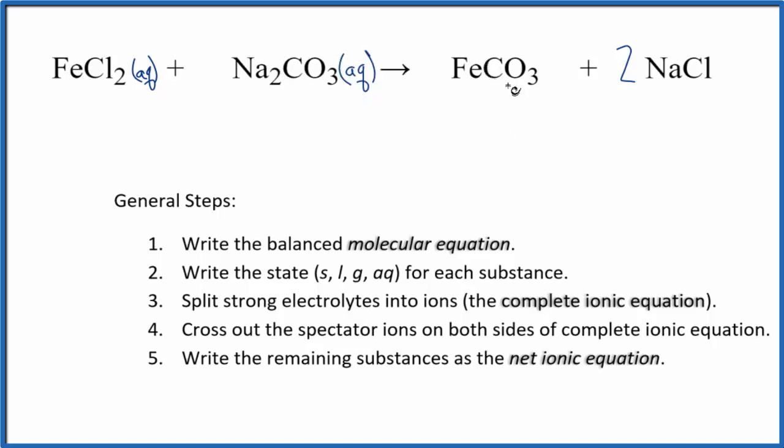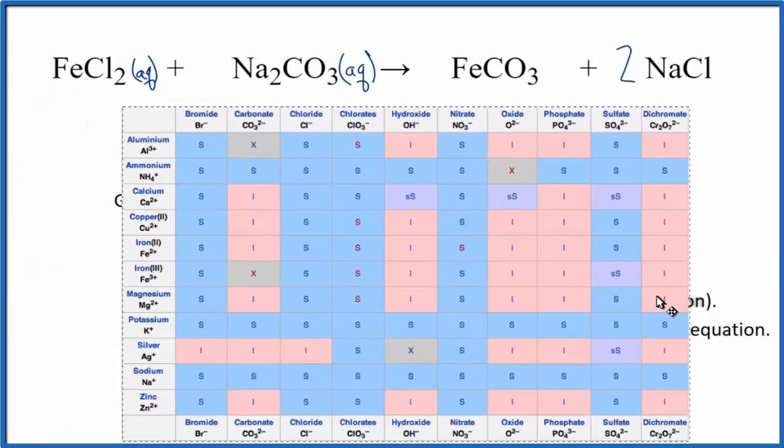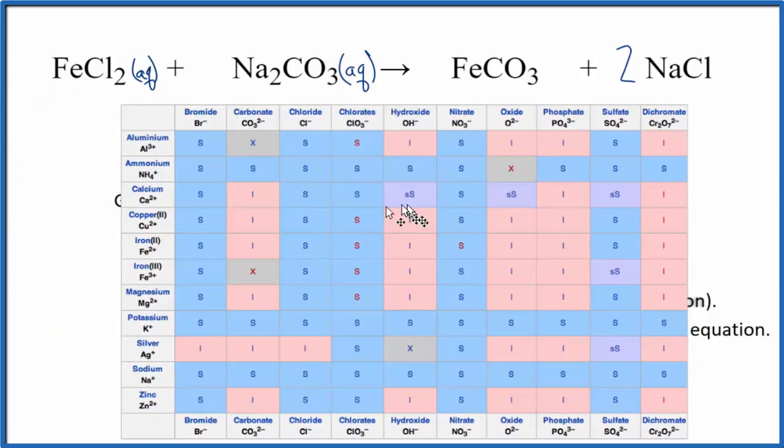Carbonates in general aren't aqueous unless they're in group 1. This metal here would be a group 1 metal. But let's check that on a solubility table real quick. So if we look for iron here, iron 2 is right here, and we have a carbonate. That I means it's insoluble. So it's actually a solid.